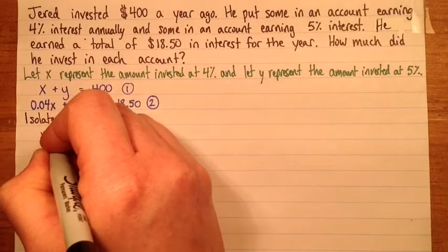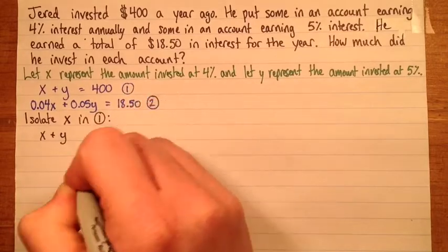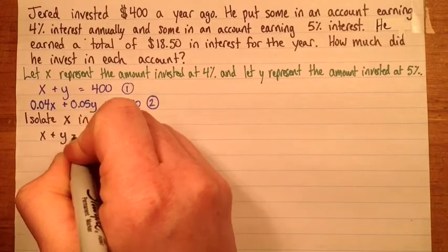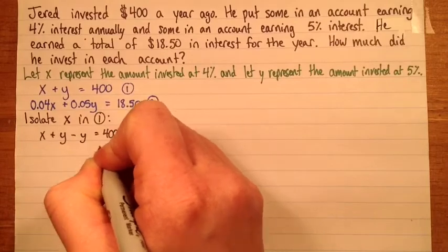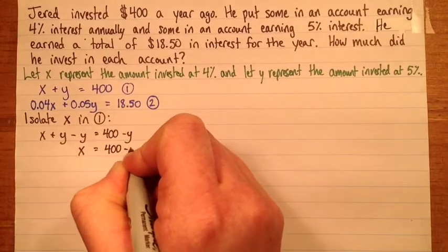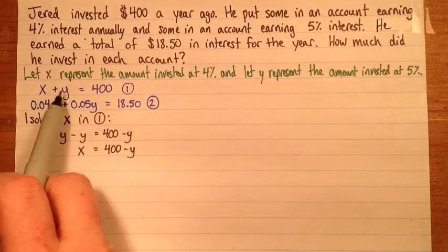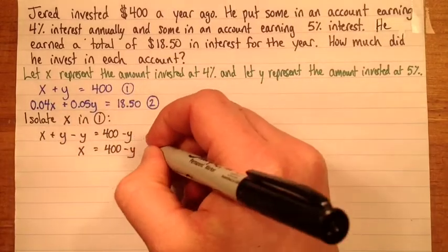So let's isolate X in equation 1. So we have X plus Y equals 400. And then to isolate X, I'll subtract Y from both sides. So X equals 400 minus Y. Alright, we're going to use this, so we'll give it a name. But it's basically equation 1. We've just rearranged equation 1. So we'll call it 1 prime.